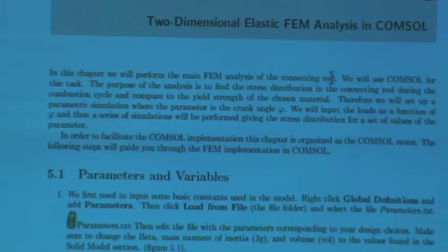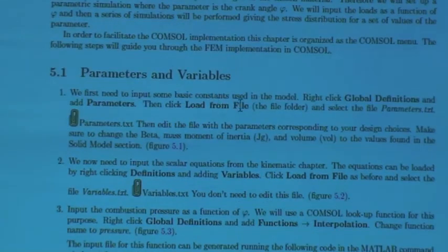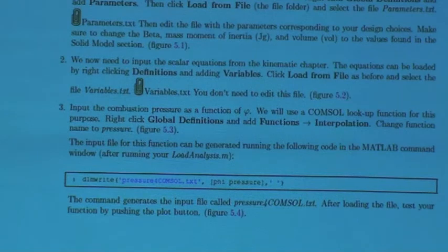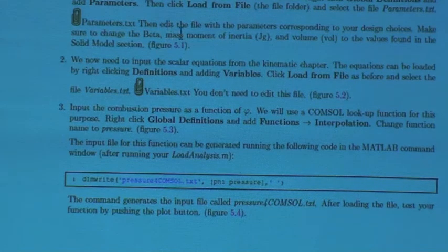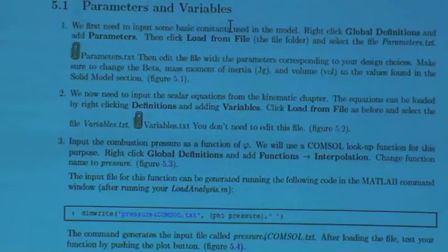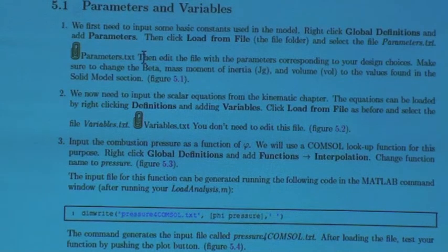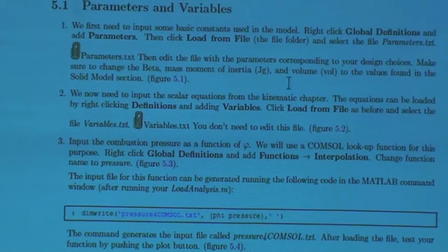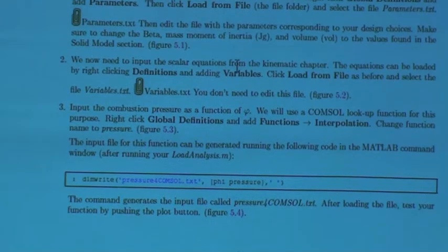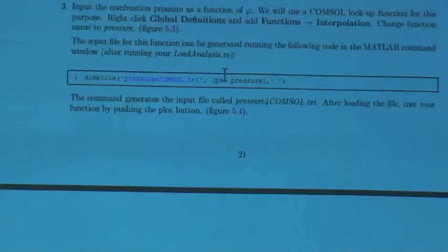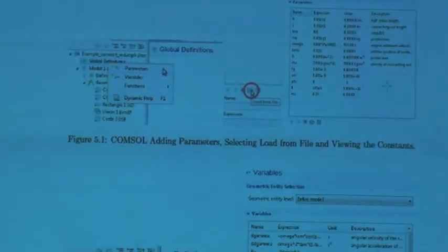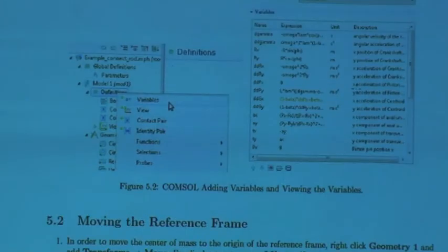Yes. So in the next chapter, we actually start doing the finite element analysis. So what you need to do is, you have parameters and variables, and these files have your, all your data that was done in the load analysis. So like, your connecting rod, like, length, and the height, and cross-section, and the inertia, and all these are parameters that you have, that you've calculated, that you have tabulated. And then you have variables, which are essentially the equations that the MATLAB file runs, which are these equations, the equations of the motion that you had in the kinematics.